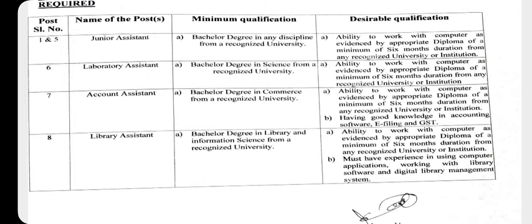For junior assistant, bachelor degree in any discipline from a recognized university is required — those people will be eligible. Also, a minimum six-month computer diploma is required. Next was laboratory assistant — bachelor degree in science discipline is required, plus a minimum six-month computer diploma.